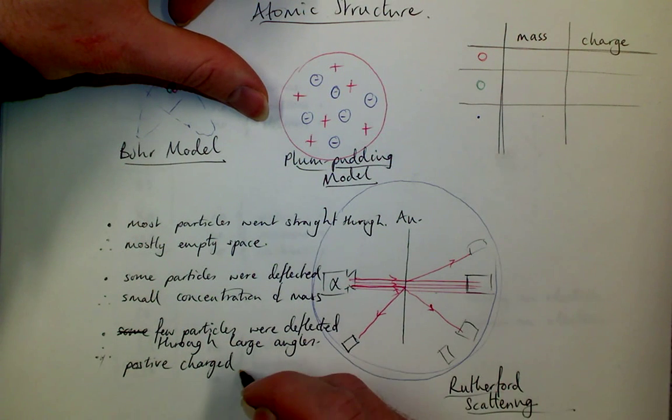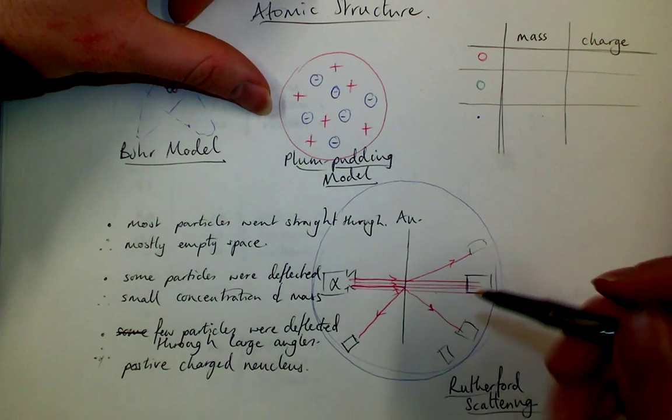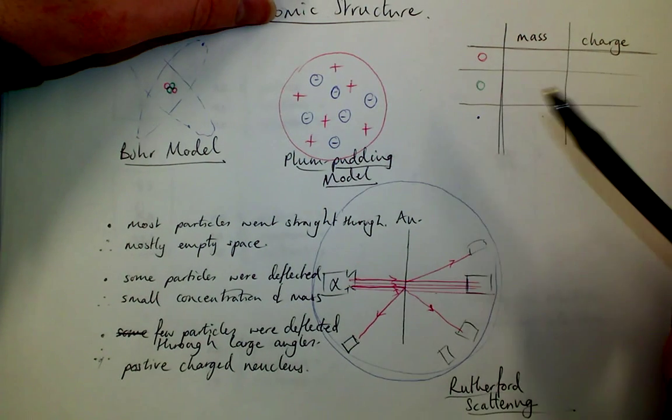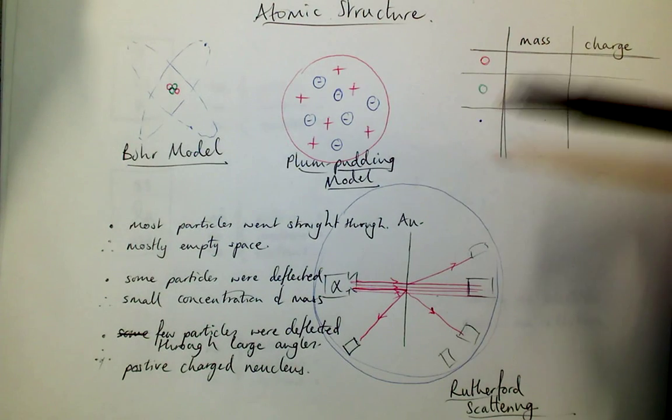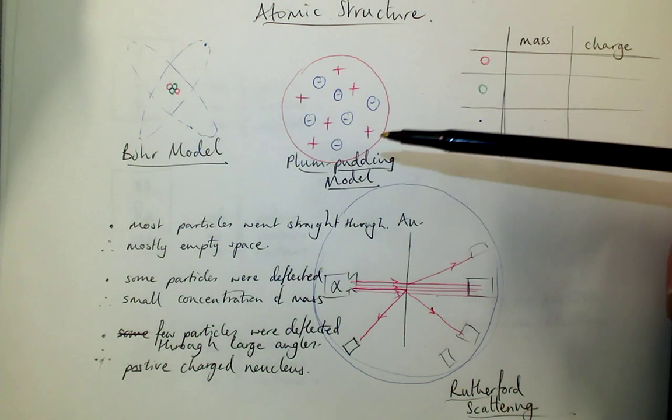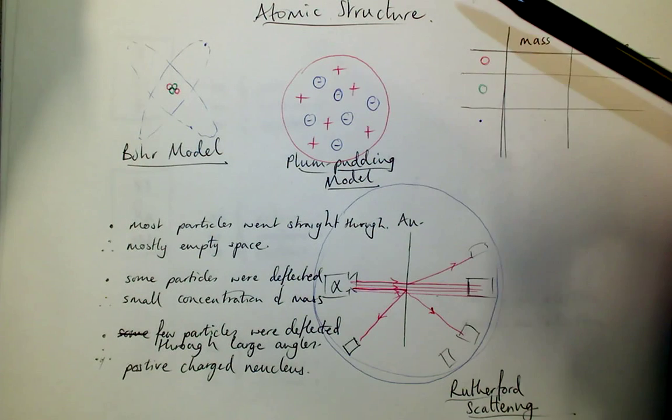And he coined the term nucleus, which means a kernel at the center of something. So actually that disproved what was the accepted model, the plum pudding model, where the mass is all evenly distributed throughout the atom. And the only mobile bits, the only bits that could change were the electrons.